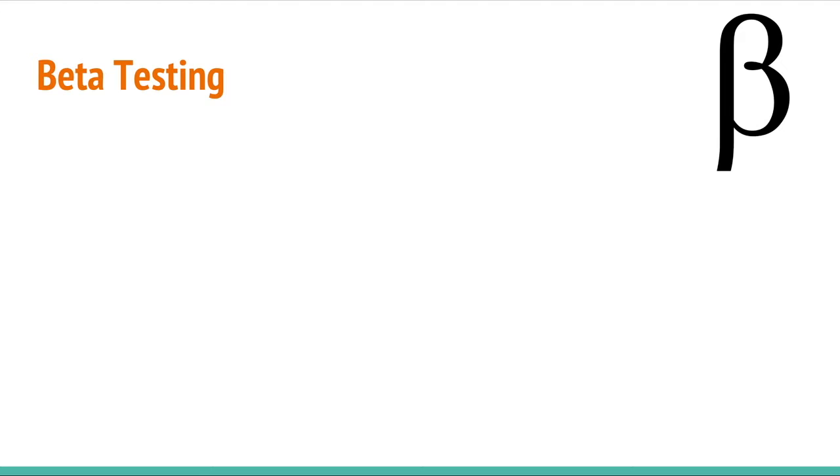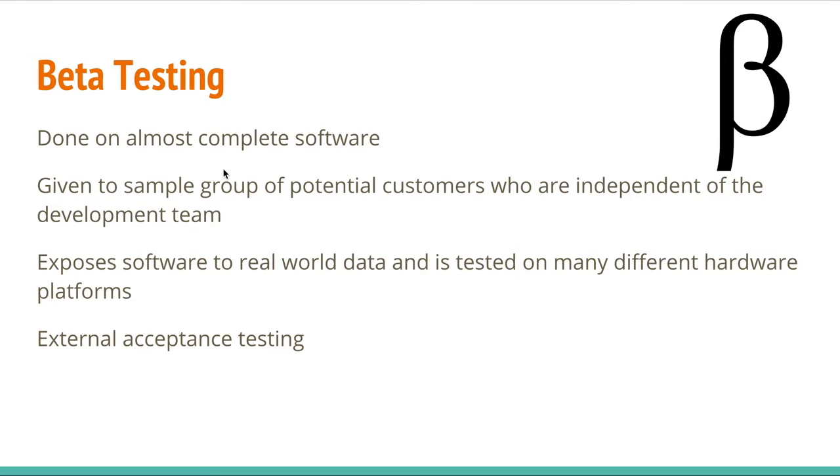Now, we have beta testing. Beta testing is done on almost complete software, unlike alpha testing, which is done in various stages of development. And beta testing is given to a sample of potential customers who are independent of development teams, so not part of that company. And this allows the software to be exposed to real-world data and can be tested on many different hardware platforms. So, it's better testing. And this is referred to as part of external acceptance testing.